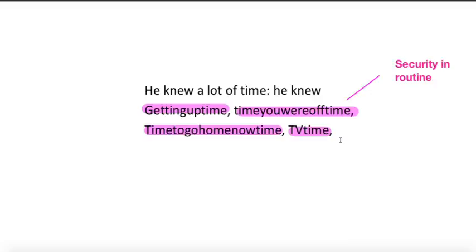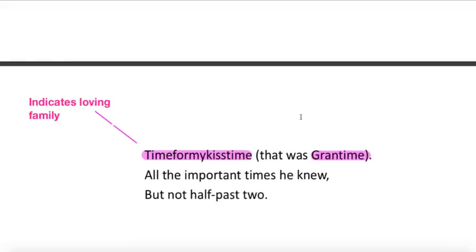He knew a lot of time, he knew getting up time, time you were off time, time to go home now time, TV time. So what you'll notice is the times that he understands are times that relate to a certain routine. He knows that it's time to get up, because I'm sure his mum or dad tell him, time you're off time, that's, I'm sure, time to leave for school. And then time to go home now time, maybe his teacher tells him it's time to go. And then when he gets home, it's TV time. And I think there's a real sense of security relayed with the times that he is comfortable with. And it suggests that he's got this routine set out typically by his parents, but also by his school. And I think there's a great sense of security. So introducing this concept of half past two, you could argue is intimidating to this boy, who is only used to these kind of terms.